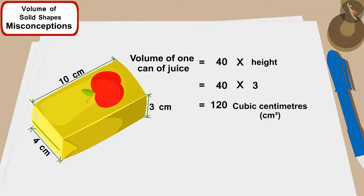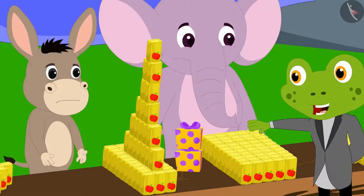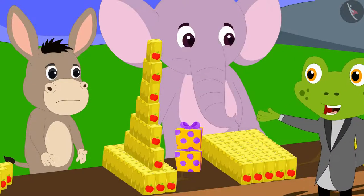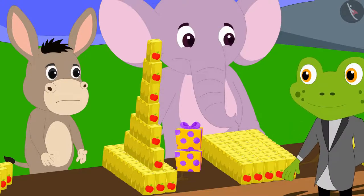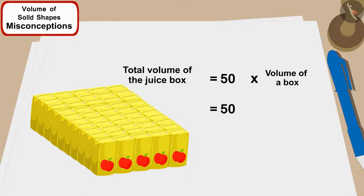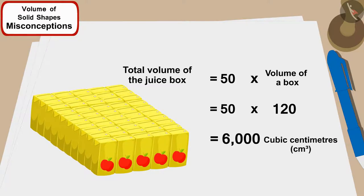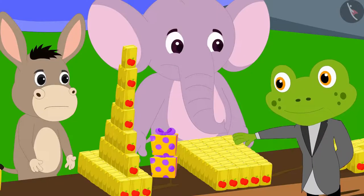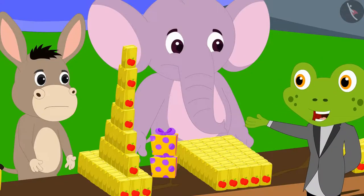Taru the frog then asked Appu: 'How many juice boxes have you used in your shape?' '50 boxes,' Appu quickly said. 'This means the total volume of juice in your shape will be 50 times the volume of one box — 50 × 120 = 6,000 centimeters cubed,' Taru explained.